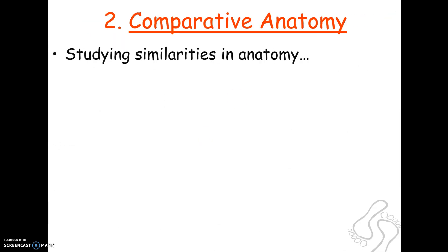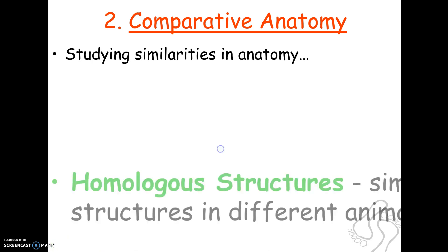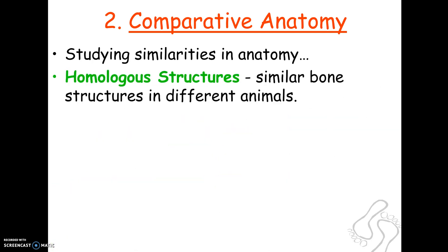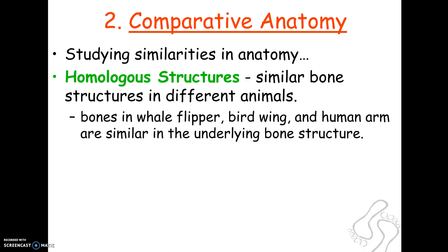The second way we can study evolution is comparative anatomy — literally looking at the anatomy of creatures living today and seeing what they have in common. One thing we can look at is homologous structures: structures that seem to come from a common ancestor and are very similar, typically bone structures. For example, the flipper of a whale, the wing of a bird, and a human arm — even though they're used for different things and externally look very different, the underlying bone structure is very similar.